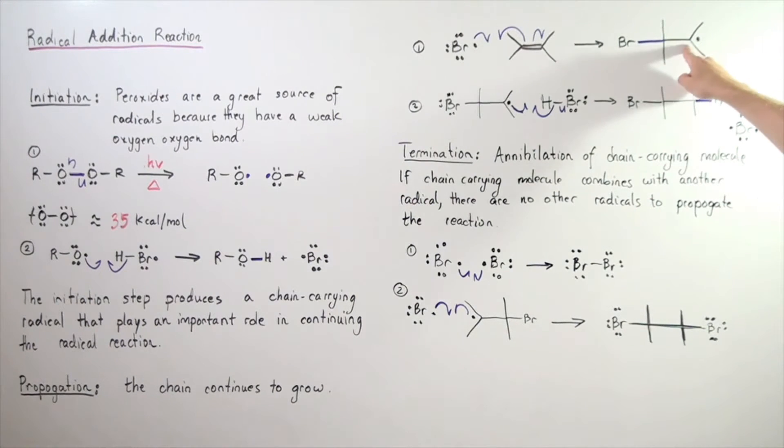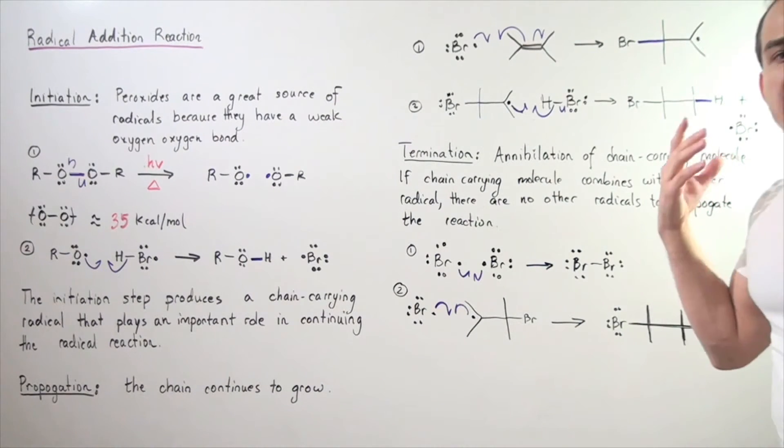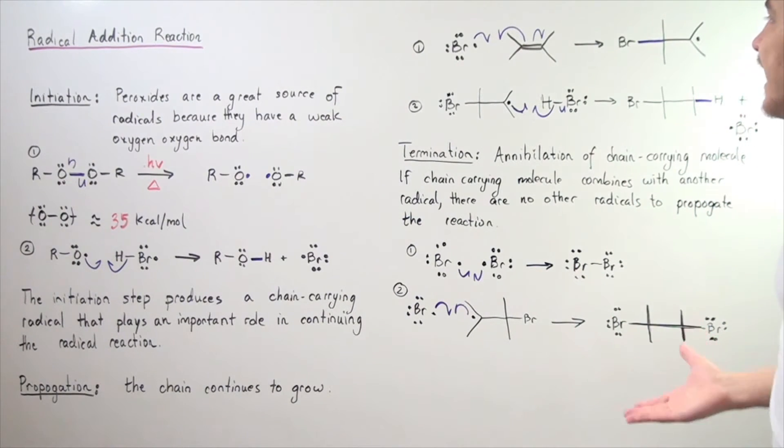The second electron stays on this sp2 hybridized carbon. That electron is found in a 2p orbital.